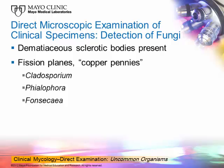The next slide shows something not commonly seen in the United States or North America. It is an organism that produces what we call dematiaceous sclerotic bodies, also called muriform bodies in some publications. They are brown, kind of golden color — they look like copper pennies. They reproduce by fission; you can see the fission planes. The organisms that produce these would be Cladosporium, Phialophora, and Fonsecaea.